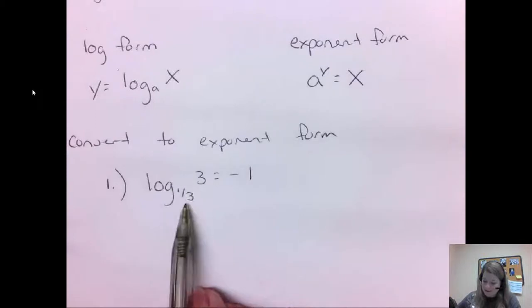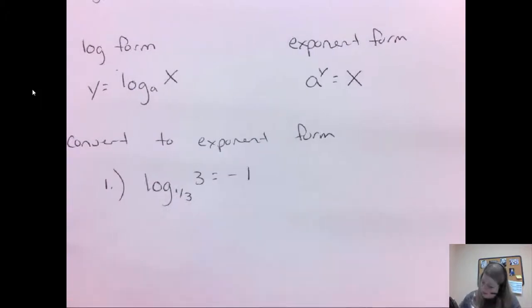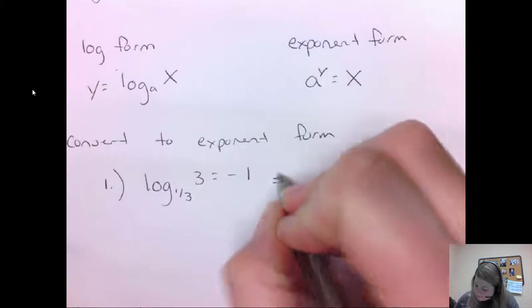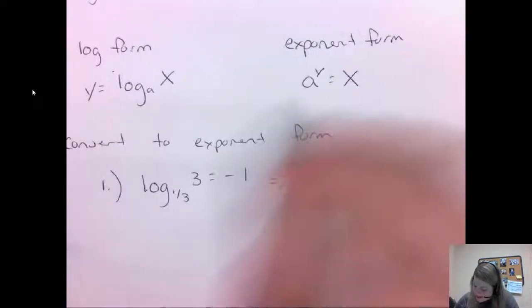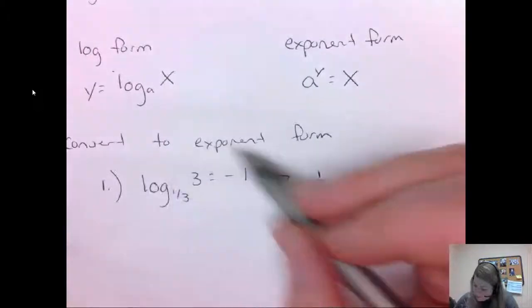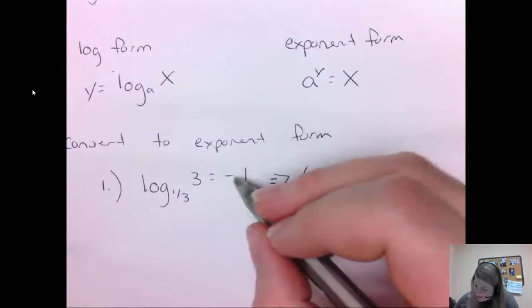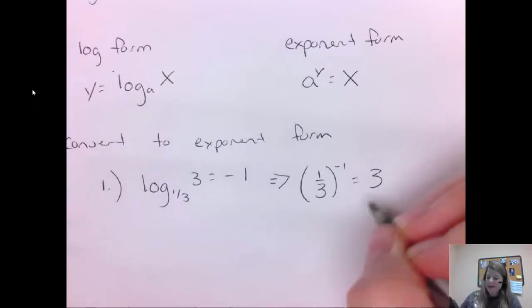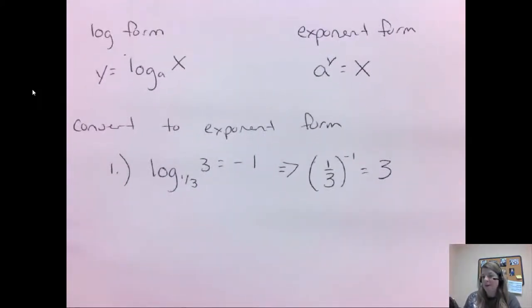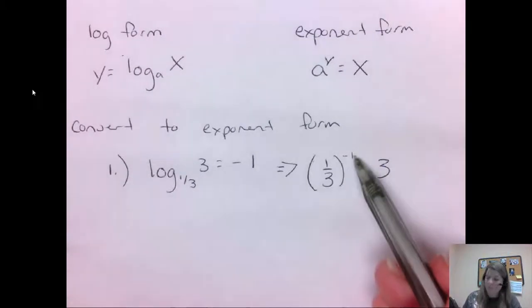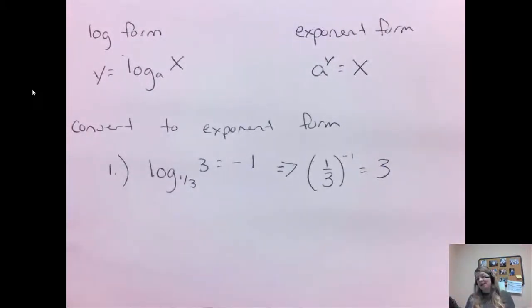Our base, or it becomes our base, it's the root of our log. So when we go to convert this, it becomes one third is your a, and it has to go to the power of what it equals. So one third goes to the power of negative 1, and that has to equal 3. So that's how you can evaluate it. The negative 1 will flip it, so it becomes 3 over 1 to the first power, and that is the same thing as 3. So this is like a true statement.